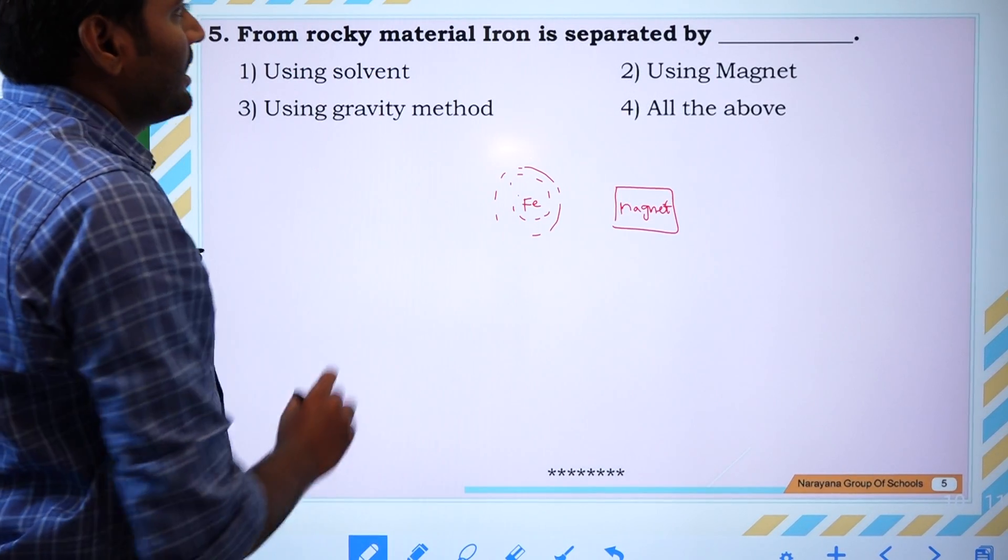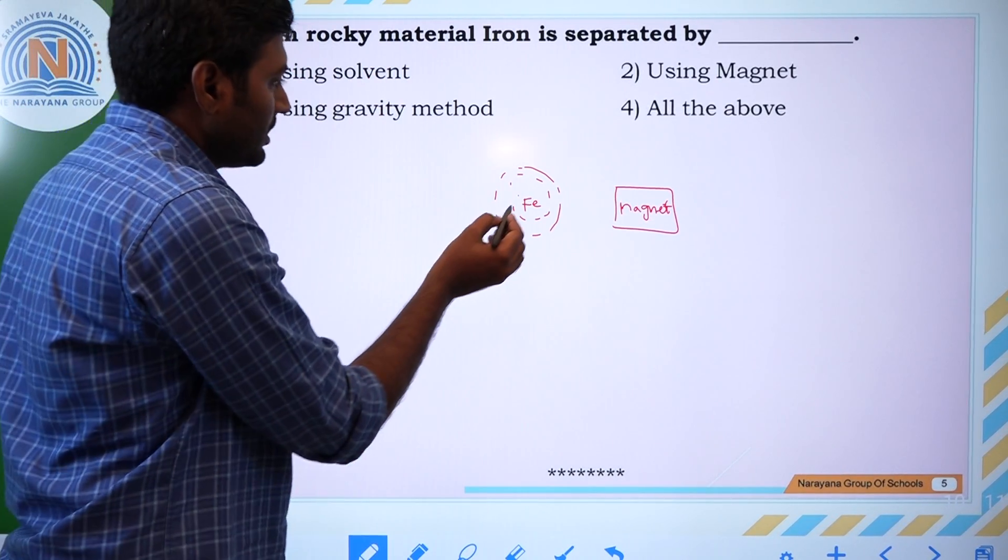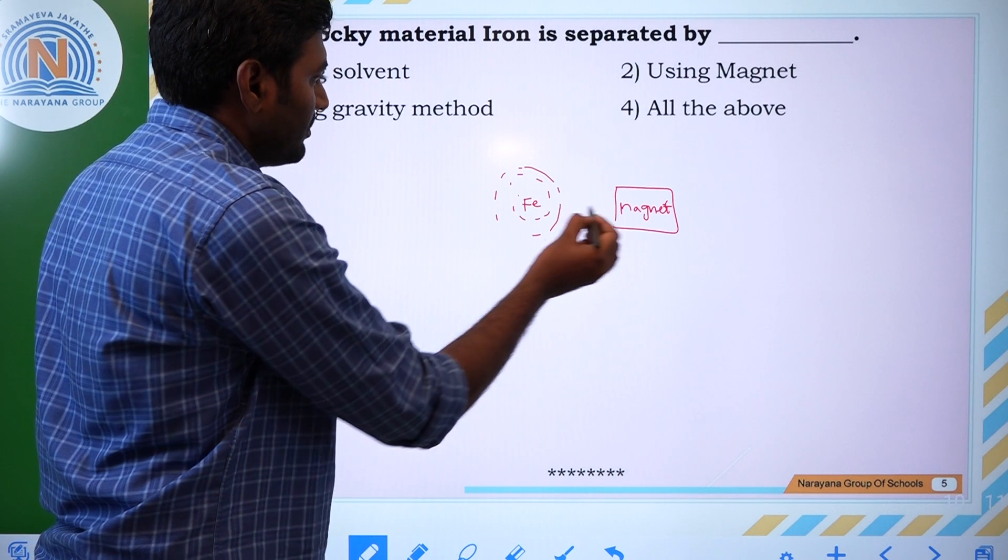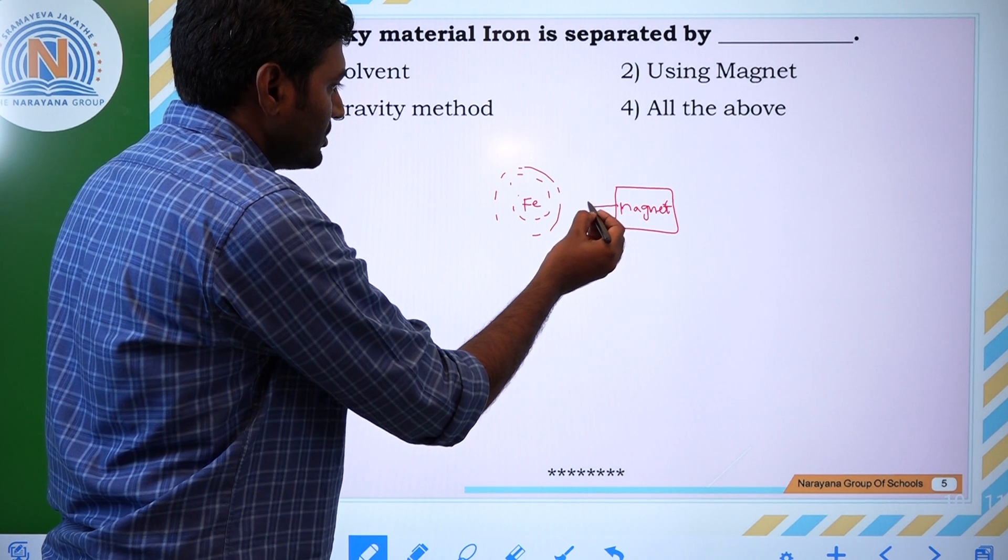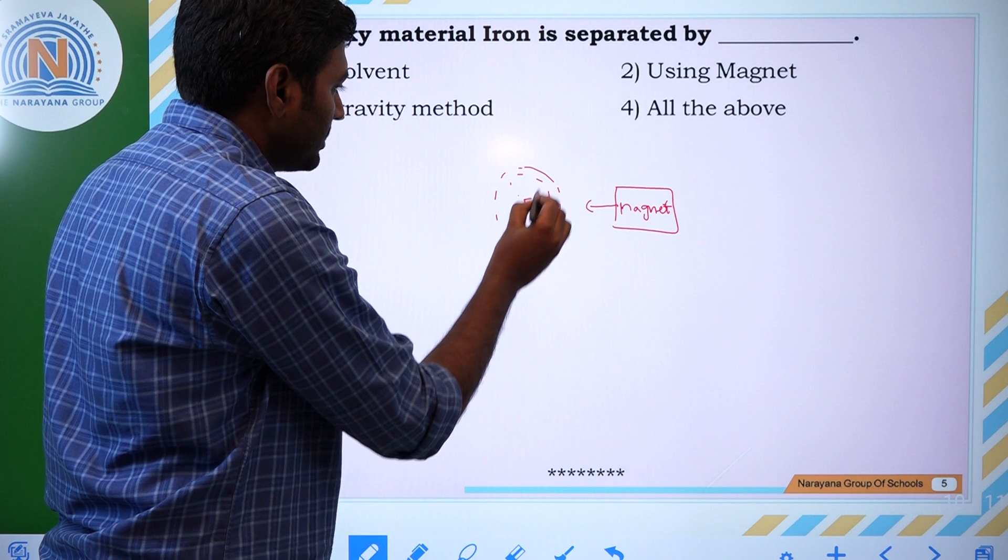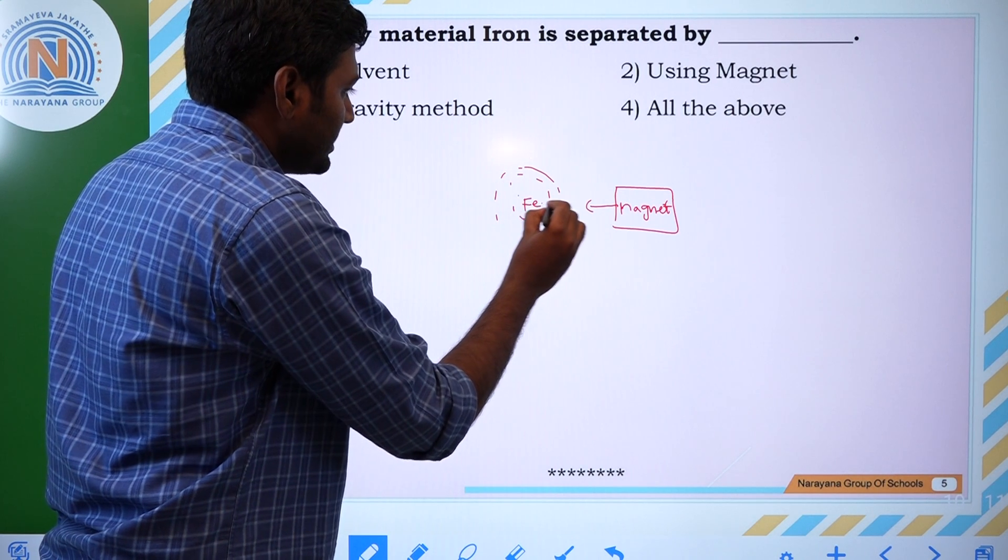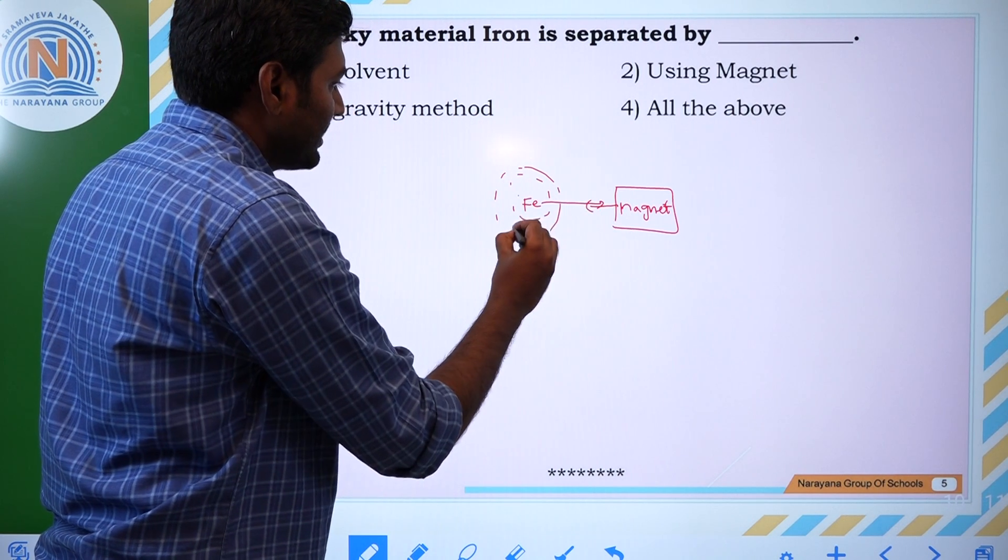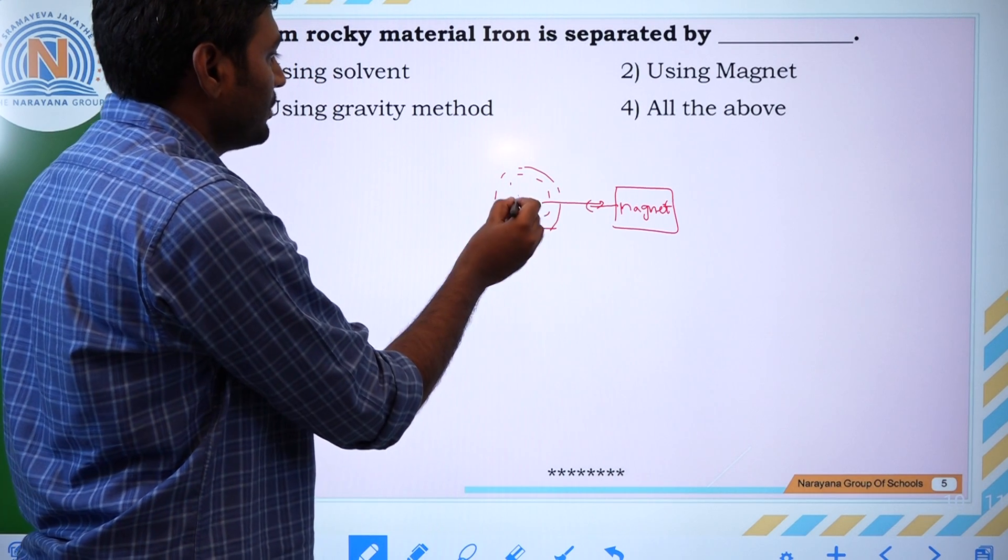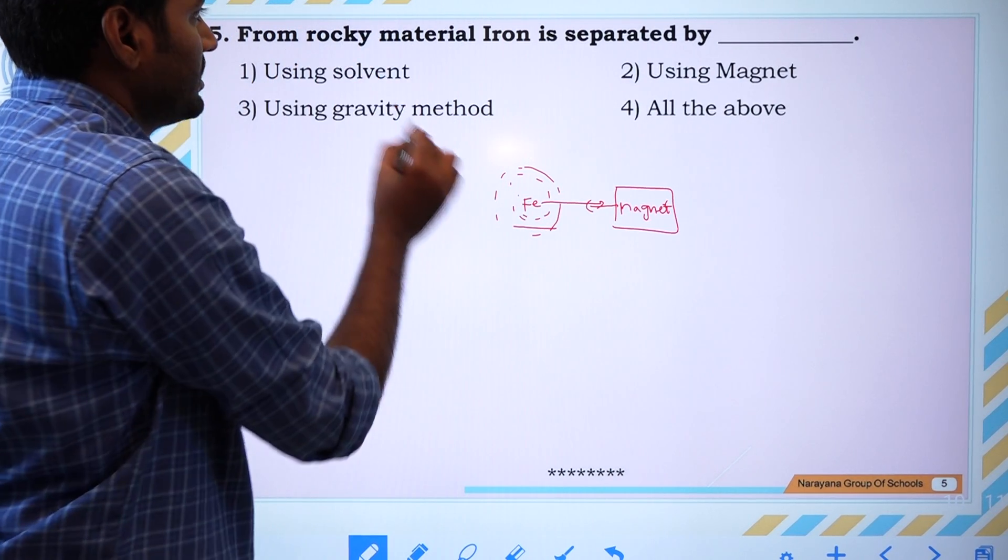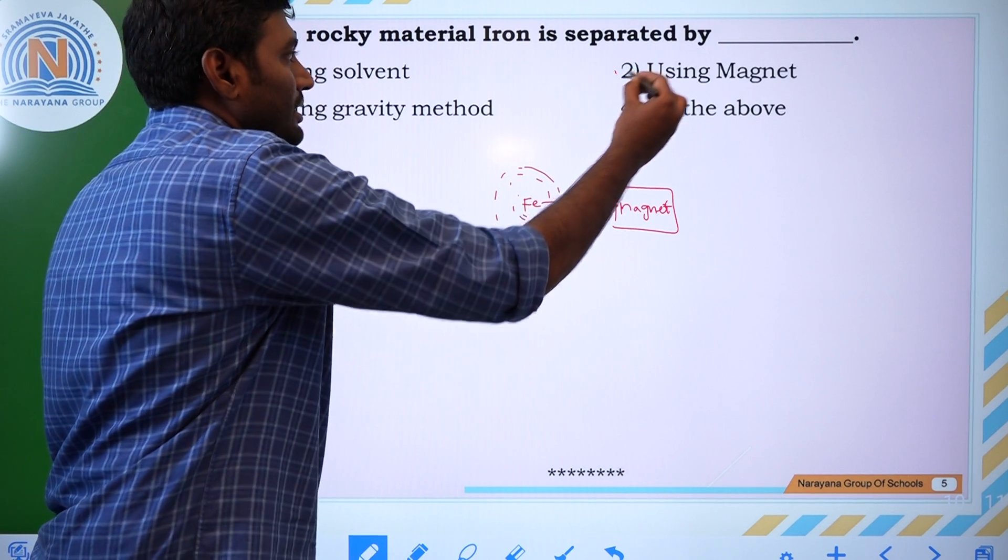From rocky material, iron is separated. Assume this is rocky material. Whenever we introduce a magnet closer to the rocky material, iron is attracted towards the magnet. Hence, by using a magnet, we can separate iron from the rocky material. The answer is using magnet.